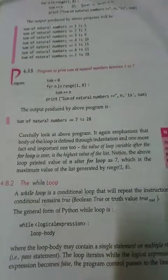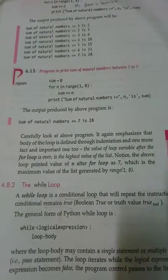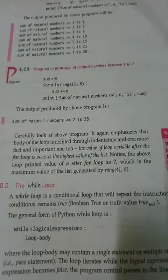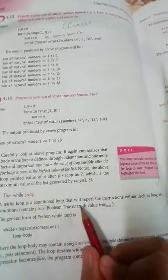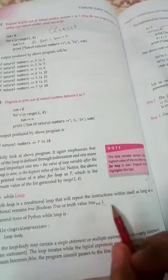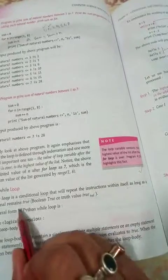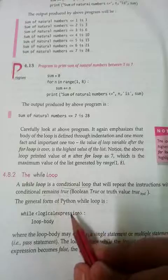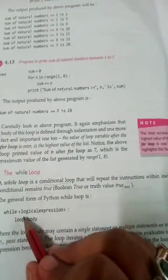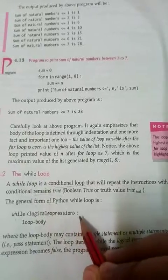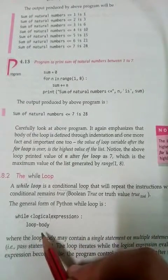Now I will explain the while loop. A while loop is a conditional loop that will repeat the instructions within itself as long as the condition remains true. The syntax of the while loop looks like this: the while keyword, next you define the logical expression, followed by a colon, and then your loop body.